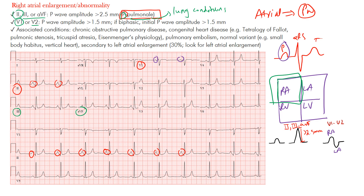In V1, you want the amplitude of the initial portion of the P-wave to be at least 1.5 millimeters. Normal P-waves can look like these two here. If you start to get any heightening beyond 1.5mm in those right precordial leads, that may suggest right atrial enlargement.